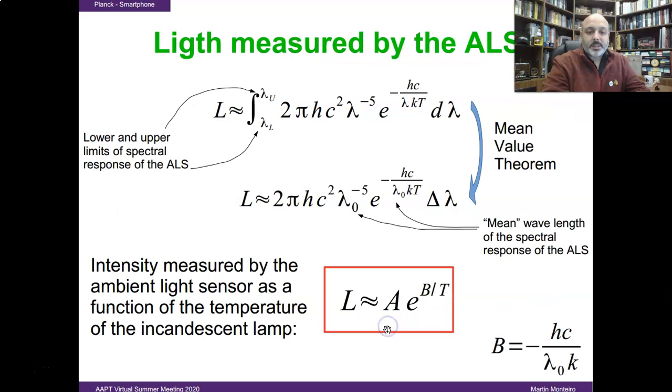then we could calculate the light intensity measured by an ambient light sensor. We have to integrate the energy over every wavelength, and thanks to the mean value theorem, we could express the light intensity this way,